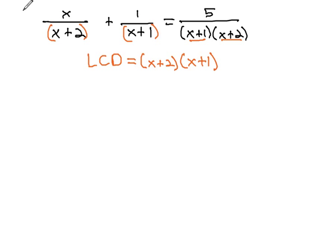What we can do with this LCD, then, is multiply each term on the left and right by x plus 2, x plus 1. x plus 2, x plus 1, and x plus 2, x plus 1. This will allow us to reduce out all the fractions. The x plus 2's divide out, leaving just x times x plus 1.